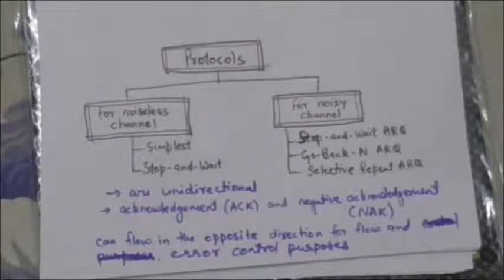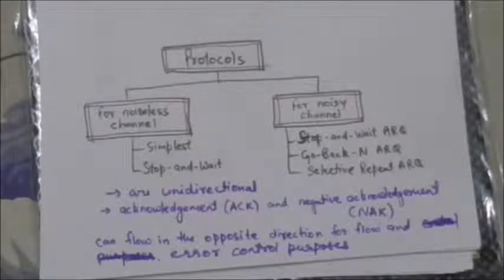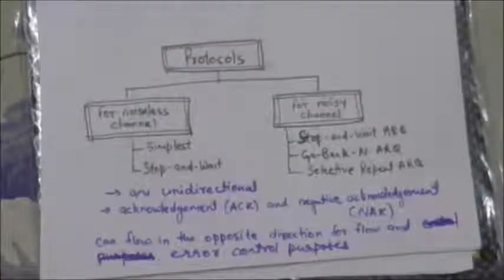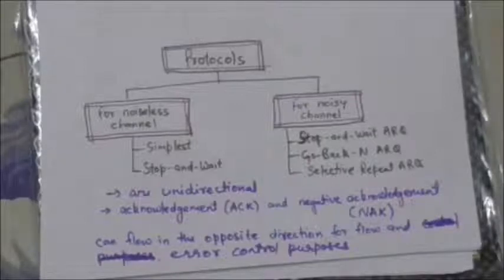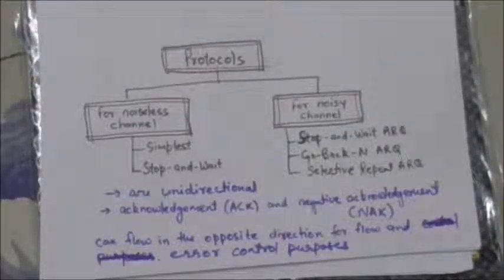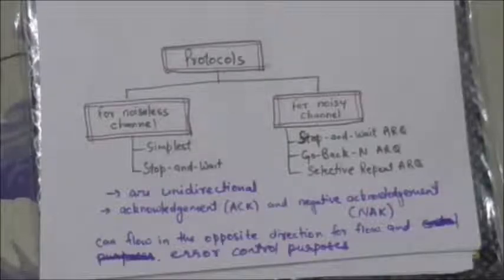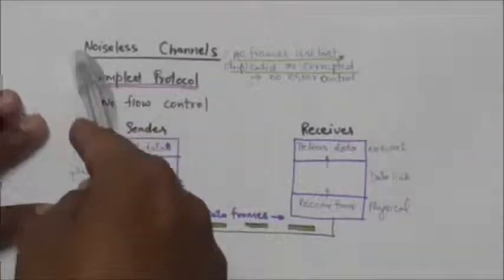All these protocols are unidirectional. In these protocols, data frames travel from the sender to the receiver, but special frames called acknowledgement (ACK) and negative acknowledgement (NAK) frames can flow in the opposite direction for flow and error control purposes.